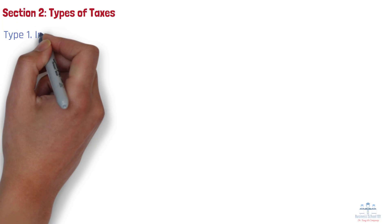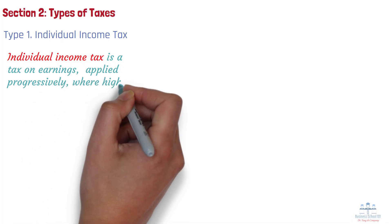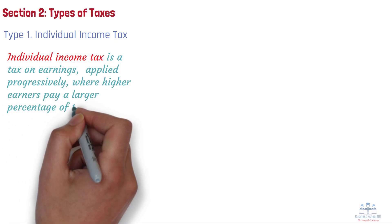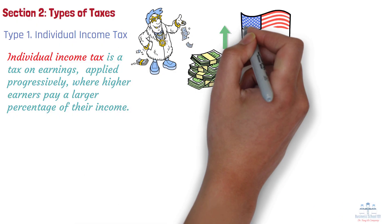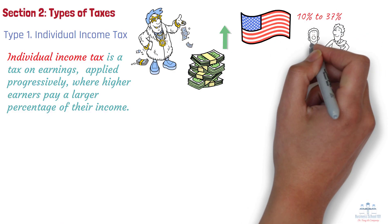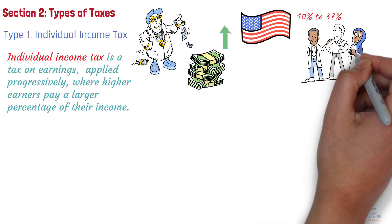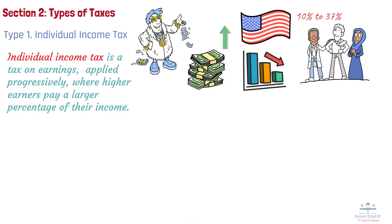There are different types of taxes that governments rely on, and each has its own purpose. Individual income tax is a tax on earnings, applied progressively, where higher earners pay a larger percentage of their income. Tax brackets vary by income, with higher portions taxed at higher rates. For example, in the U.S., rates range from 10% to 37% depending on income level, ensuring those who earn more contribute more. Deductions and credits can reduce taxable income, adjusting the total tax owed.